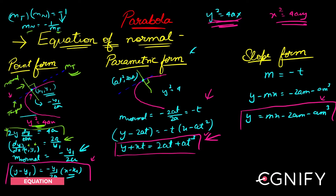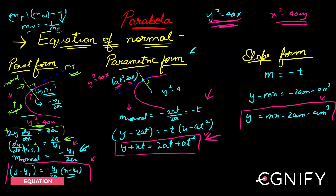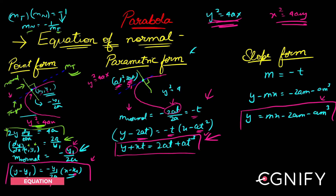For the parametric form, the derivation is similar. Instead of (x₁, y₁), we use the parametric point (at², 2at) — valid only for y² = 4ax. The slope of the normal was −y₁/2a, and since y₁ = 2at, substituting gives slope = −t. Using slope-point form with x₁ = at², y₁ = 2at, and slope = −t, we arrive at: y + xt = 2at + at³.